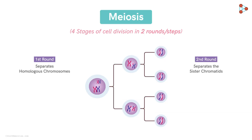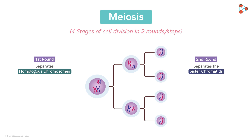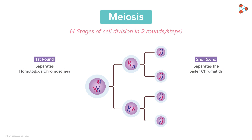Getting back to the division process: in order to carry out the separation of homologous chromosomes and then the sister chromatids, the cell undergoes two rounds of division. The cell first enters meiosis I, beginning an amazing journey of division involving four stages: prophase I, metaphase I, anaphase I, and telophase I. We'll learn about them in detail in the next video.